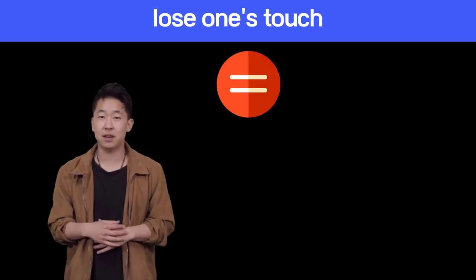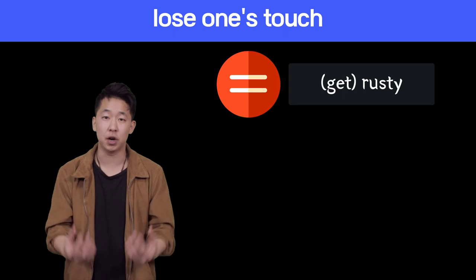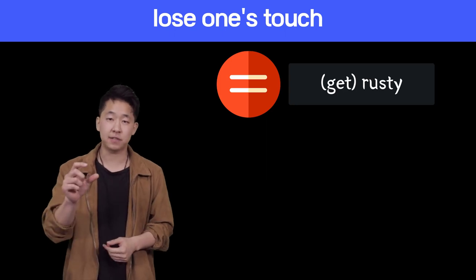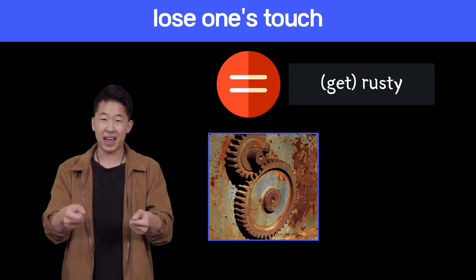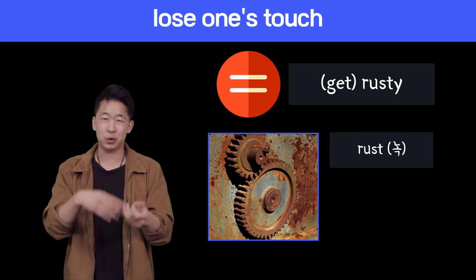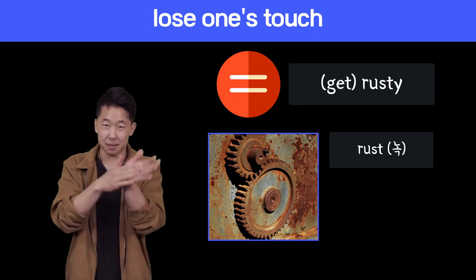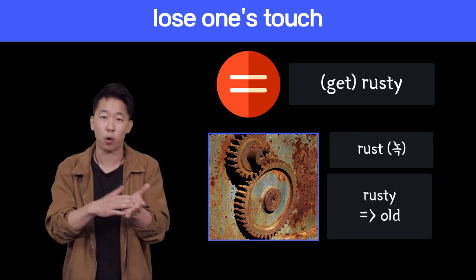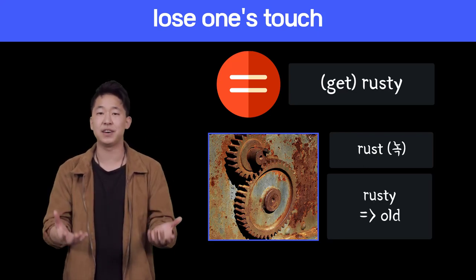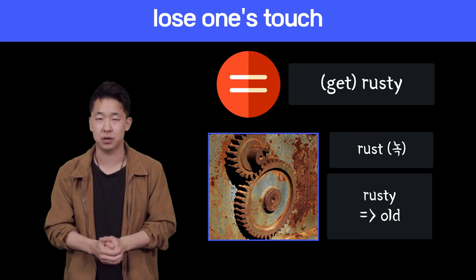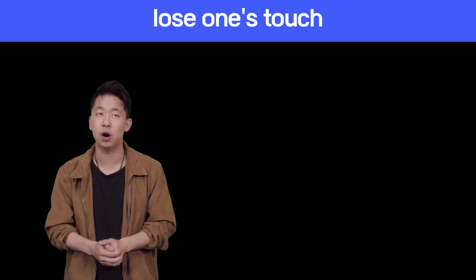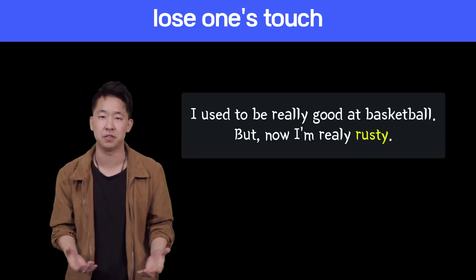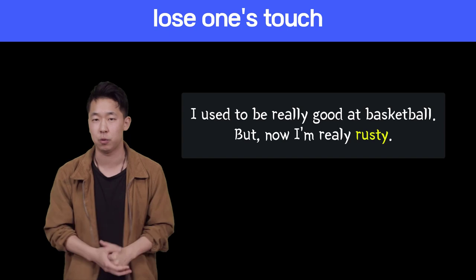One similar expression is 'rusty.' If you don't know what rust is — rust is when you have metal, it gets wet, you leave it out for a long time, and that orange stuff starts to come up. It's very rusty, it's old. It's a very similar expression. 'I used to be really good at basketball, but now I'm really rusty. I'm not good anymore.'